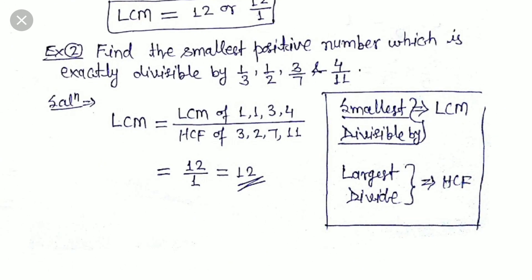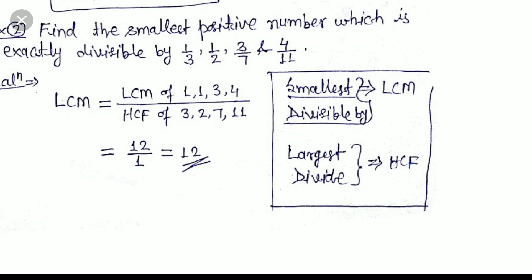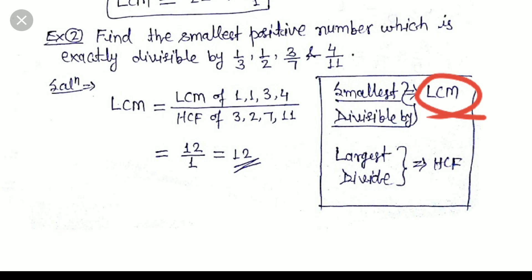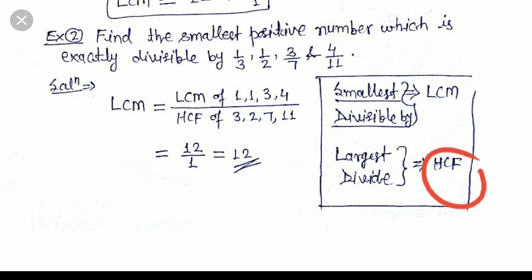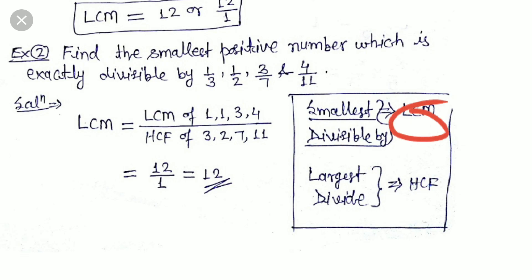Now see another example: find the smallest positive number which is exactly divisible by 1/3, 1/2, 3/7, and 4/11. When a question is asked in this form, you may be confused whether to find HCF or LCM. Focus on these two things: if they ask for the smallest number which could be divisible by the given numbers, find LCM. If they ask for the largest number which could divide the given numbers, find HCF. Here we need LCM.